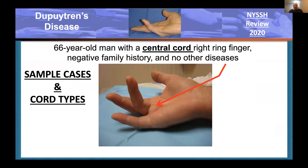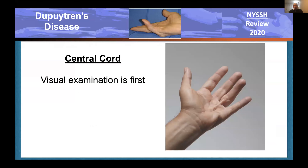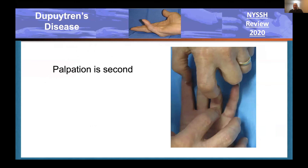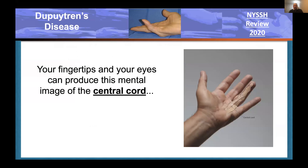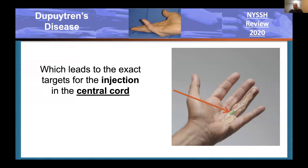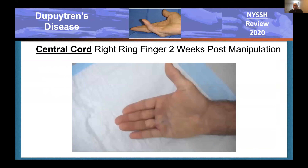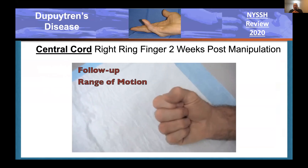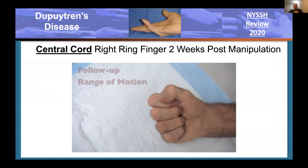Here is a 69-year-old male with a central cord to the ring finger. Here's what it looks like if you're watching carefully. Palpate it so you get an image in your mind of what it looks like underneath the skin. Define where you're going to put the injections, and here you are two weeks later after manipulation.